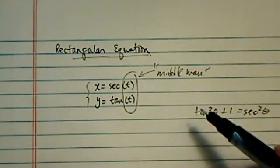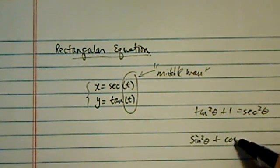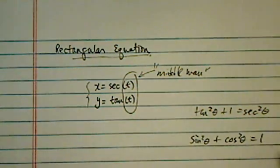Now, between you and I, I never remember which one is which, but I do know that sine theta squared plus cosine theta squared equal to 1.